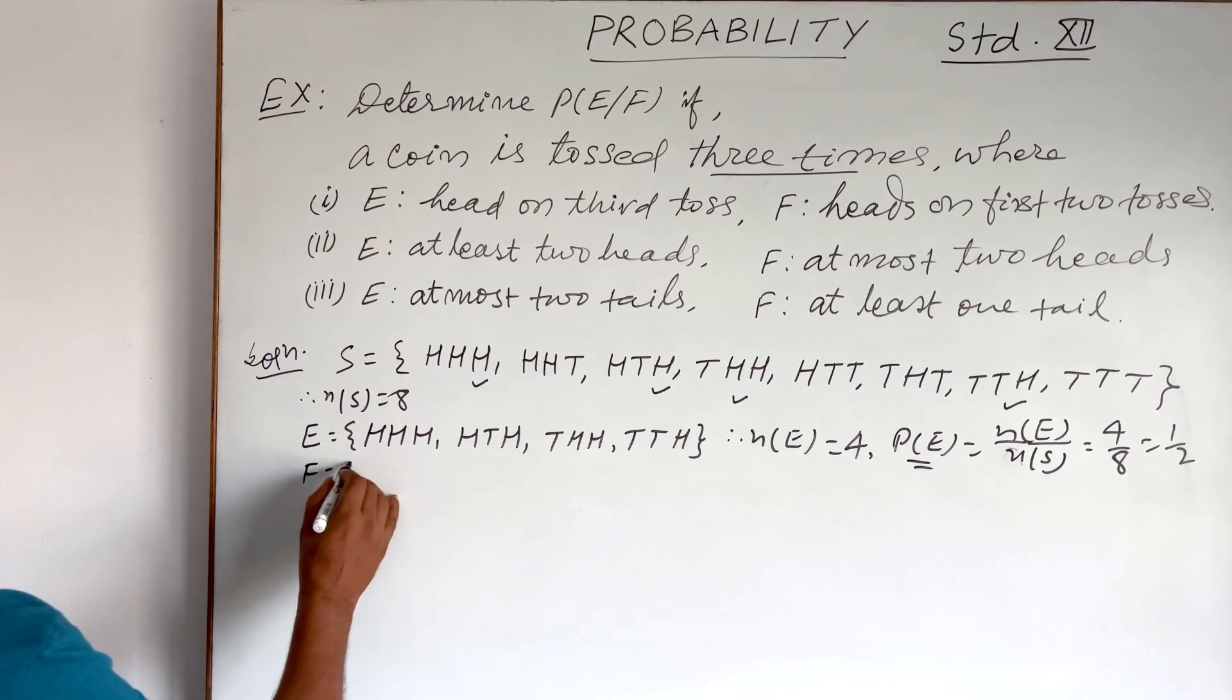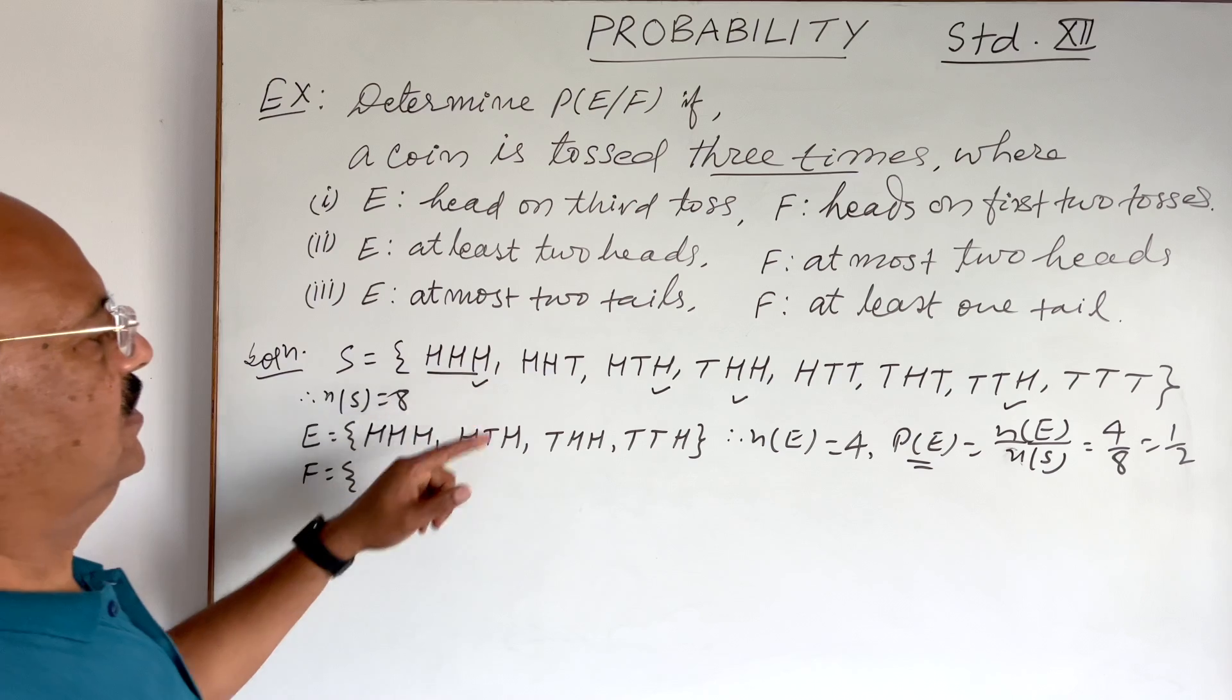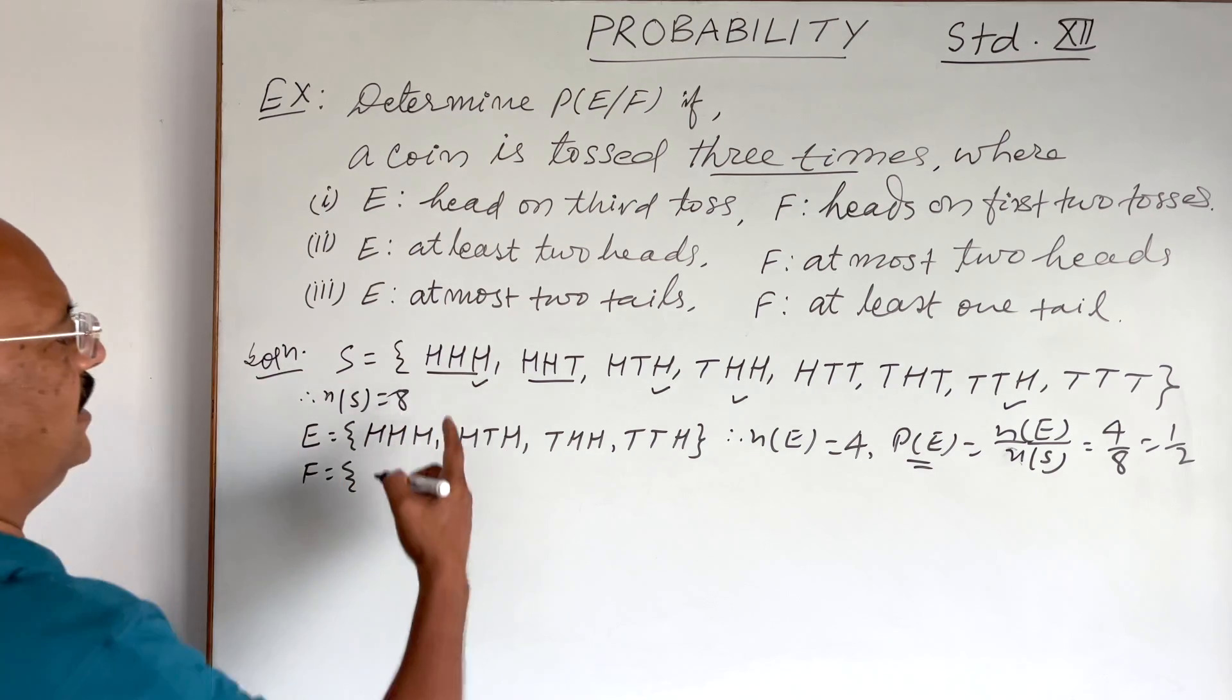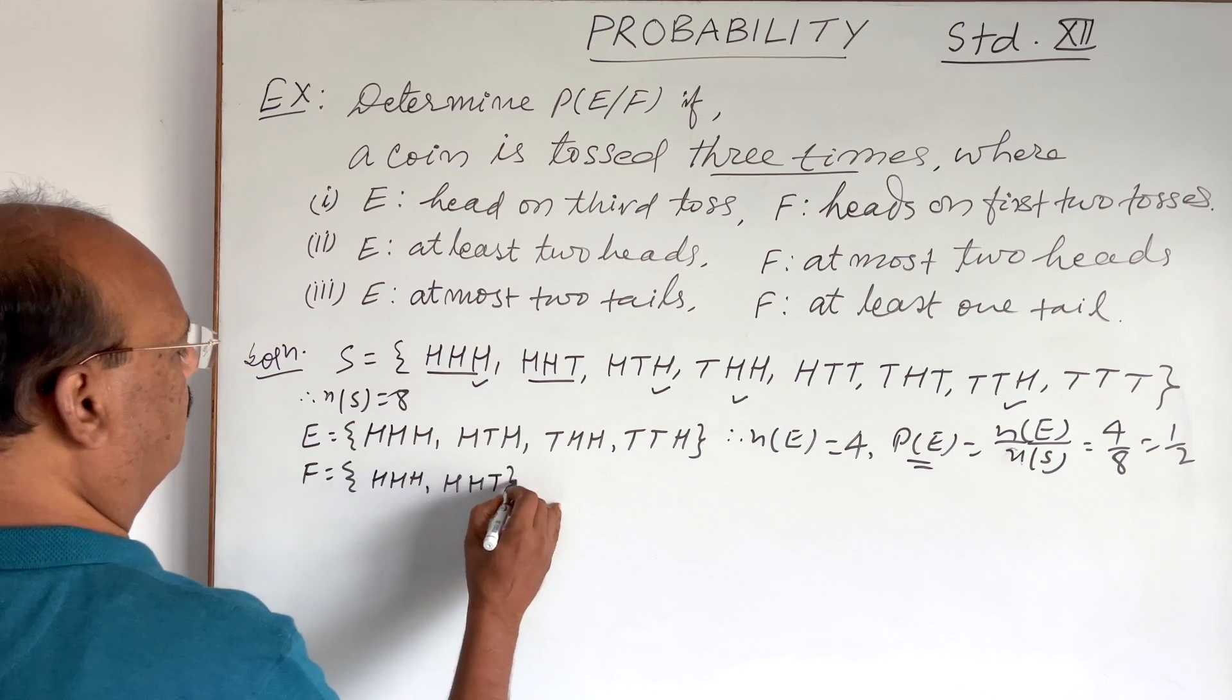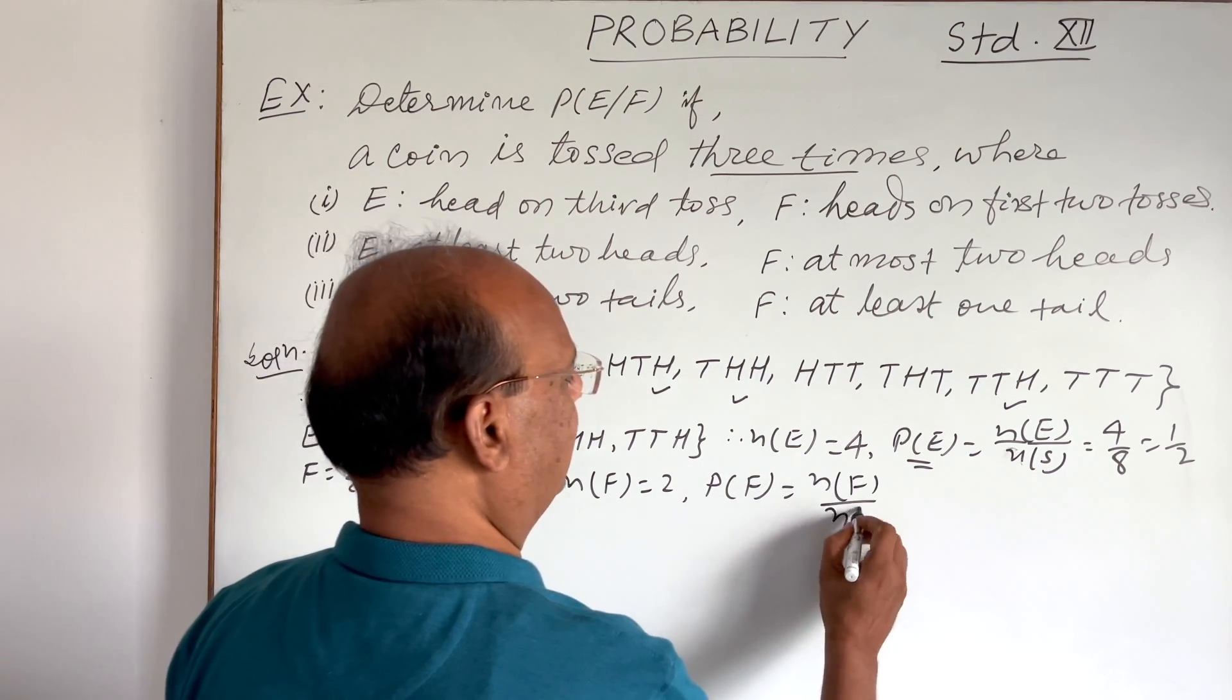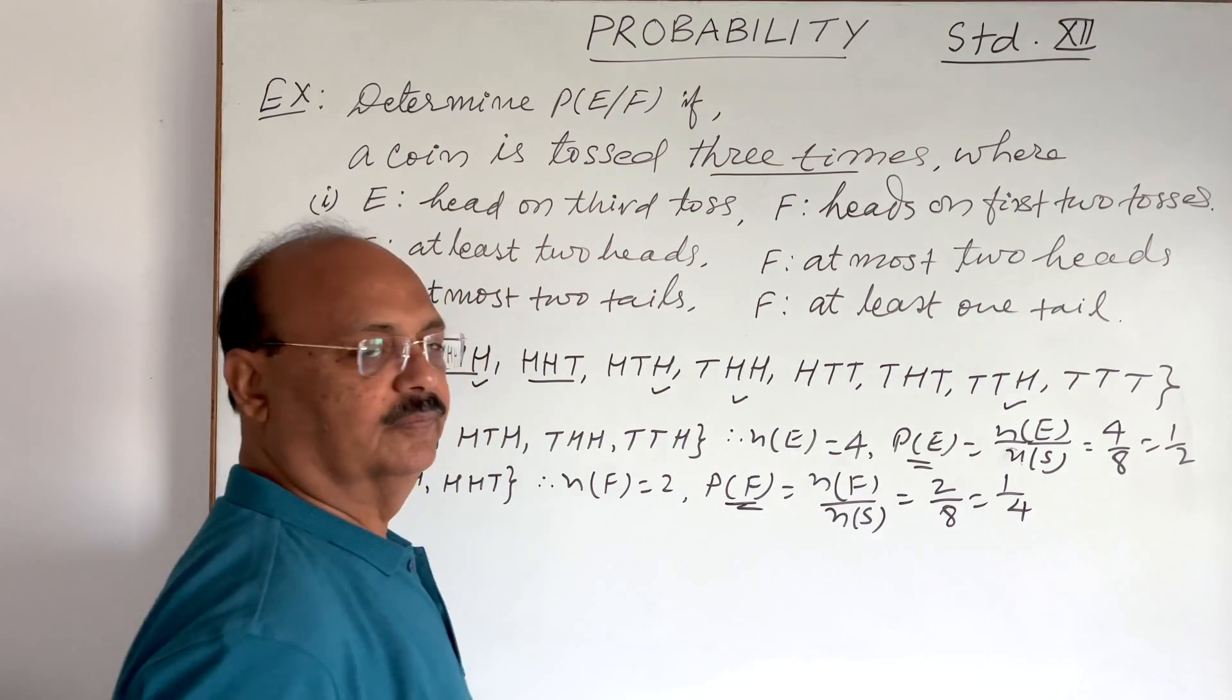And event F consists of the elements having heads on first two tosses. So one is this one, heads on first two tosses. Next, heads on first two tosses. No any other element having heads on first two tosses. So F contains these elements only, HHH and HHT. So here N(F) is equal to two, and therefore probability of F is equal to N(F) divided by N(S), and this is equal to two by eight, which is equal to one by four. This is the probability of F.